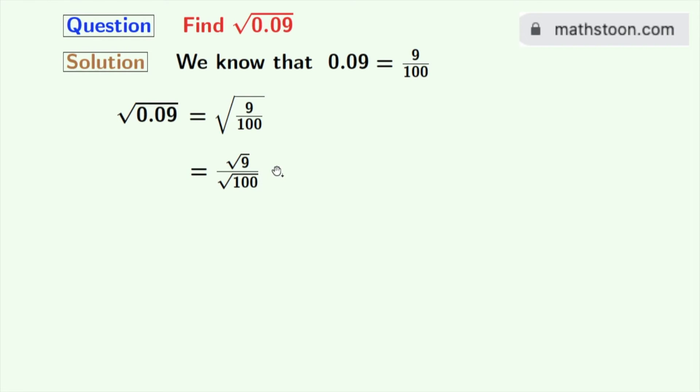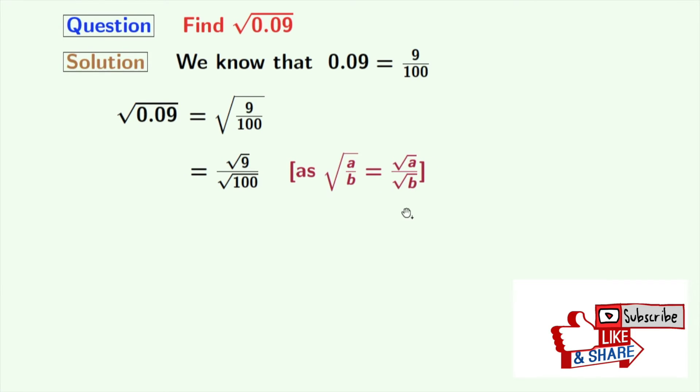Using the rule of square root of a by b is equal to square root of a by square root of b, where a is 9 and b is 100. As we know that square root of 9 is equal to 3 and square root of 100 is equal to 10.